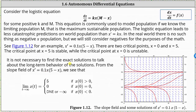It is not necessary to find the exact solutions to discuss the long-term behavior. From the slope field, we can see that the limit as t approaches infinity of x of t equals 5 if x of 0 is greater than 0. So if we start with any x value greater than 0, as t approaches infinity, x of t will approach 5. The limit equals 0 if x of 0 equals 0, indicated by the horizontal line x equals 0. The limit doesn't exist or equals negative infinity if x of 0 is less than 0, indicating x of t decreases without bound.